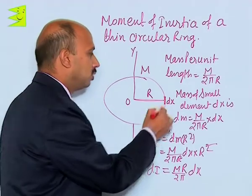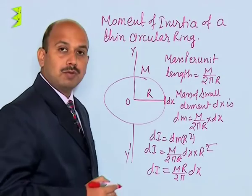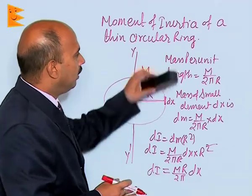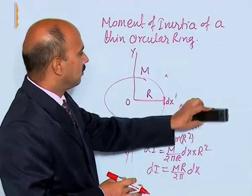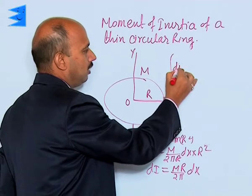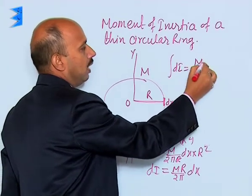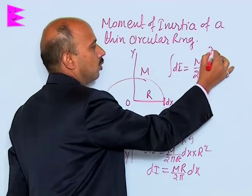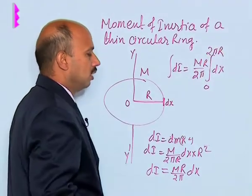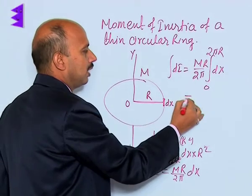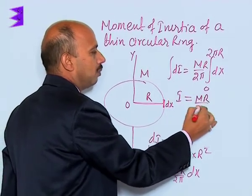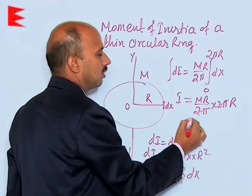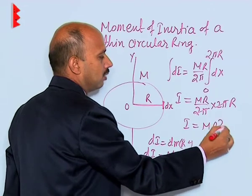This is the moment of inertia of this small element. Now, if you want to calculate the moment of inertia of the whole ring, just integrate it. So we write I = ∫(mr / 2π) dx from 0 to 2πr. After integration we get I = (mr / 2π) · 2πr, which cancels to give I = mr².